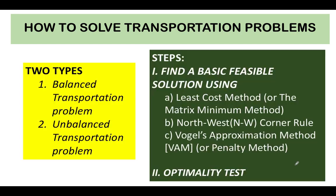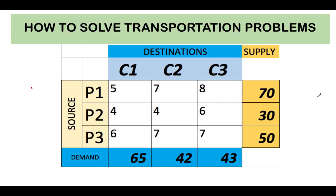In solving transportation problems, we follow these steps. The first step is to find a basic feasible solution using any of these three methods: the least cost method, the northwest corner rule method, or the Vogel's approximation method, also known as the penalty method. The goal of step one is to allocate goods to each customer. Then in step two, we perform the optimality test to assess if our feasible solution gives us the least cost. In this problem, we are going to use the least cost method.